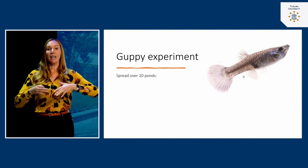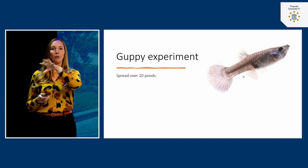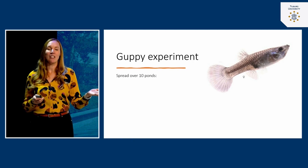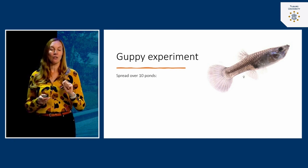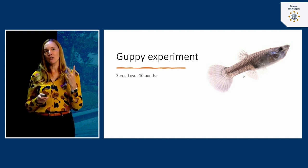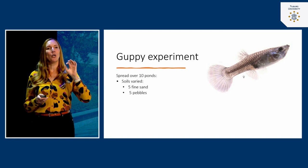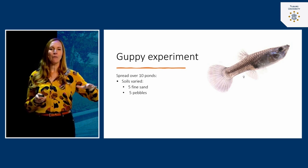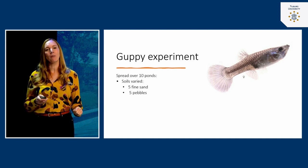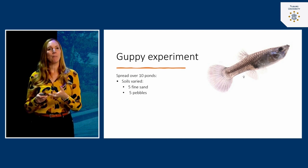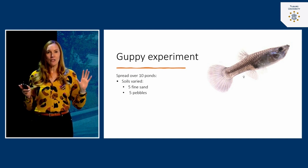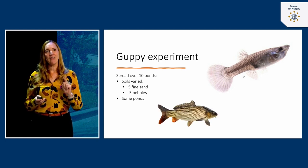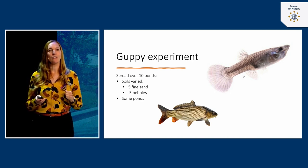In the guppy experiment, you buy a lot of guppies — little fish — and spread them over ten different ponds in your backyard. You vary the ponds: five ponds have fine sand as soil and five have pebbles. That difference doesn't really affect the guppies — they're happy in both. Then in some ponds you introduce a predator: a carp, which is really fond of eating guppies.